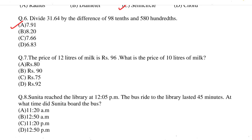Question 7: the price of 12 litres of milk is 96. What is the price of 10 litres of milk? The correct option is option A, 80. Question 8: Sunita reached the library at 12:05 pm. The bus ride to the library lasted 45 minutes. At what time did Sunita board the bus? The correct option is option A, 11:20 am.